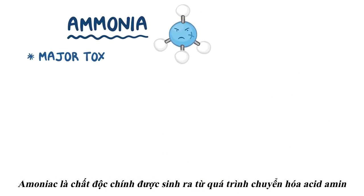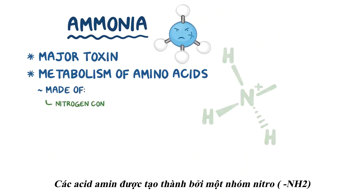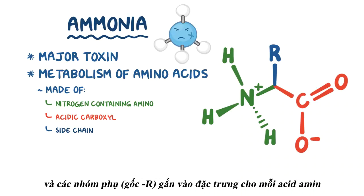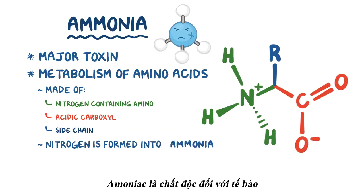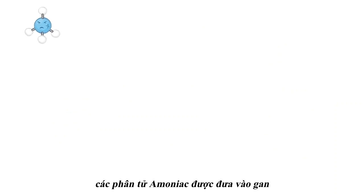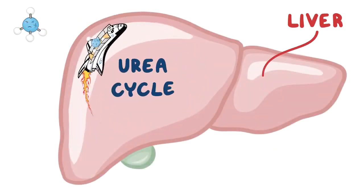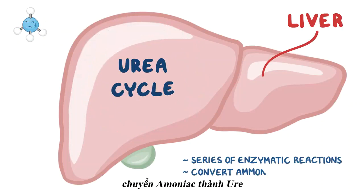Ammonia is the major toxin that results from the metabolism of amino acids. Amino acids are made up of a nitrogen group, a carbon skeleton, and a side chain that is unique to each amino acid. When amino acids are metabolized, the nitrogen is formed into ammonia, and ammonia is toxic to the cells. So the ammonia is shuttled over to the liver and sent through the urea cycle, which is a series of enzymatic reactions that convert ammonia into urea.